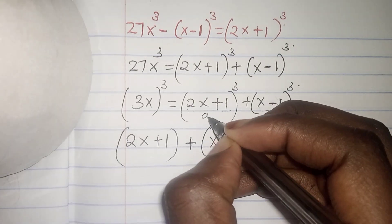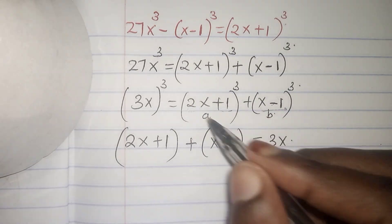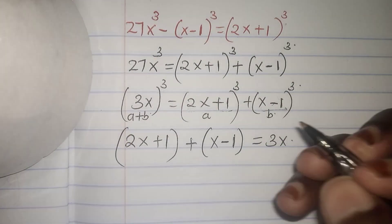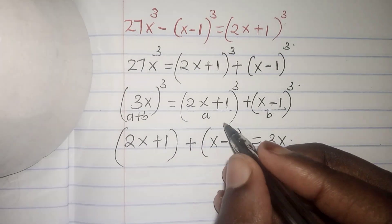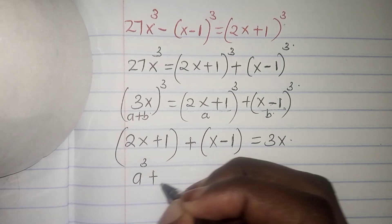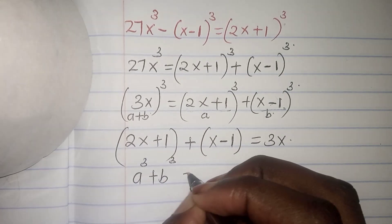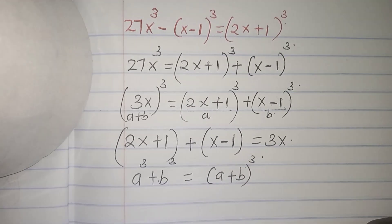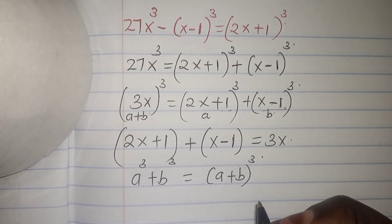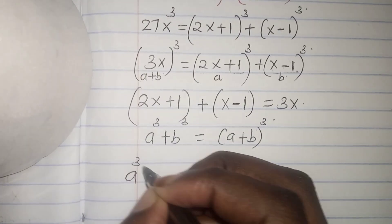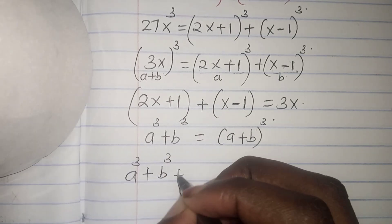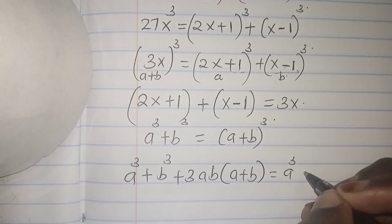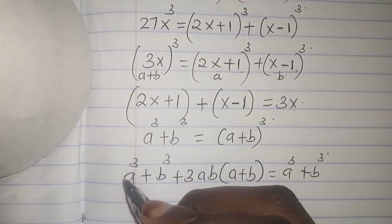Let us use substitution whereby a equals (2x plus 1) and b equals (x minus 1), so a plus b equals 3x. We use the identity: a³ plus b³ equals (a plus b)³ minus 3ab(a plus b).